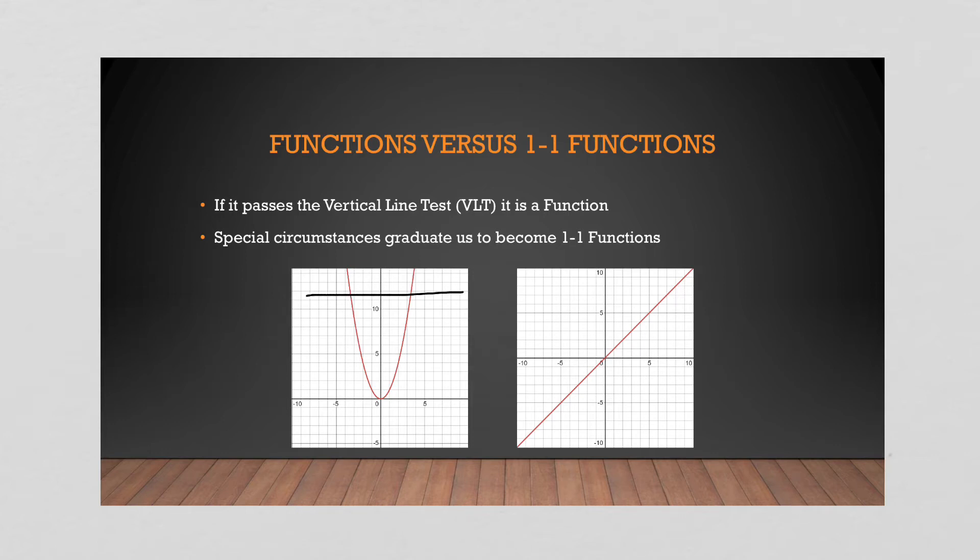Once you've passed the vertical line test, you then check the next test, which is the horizontal line test. So you draw a horizontal line. And here you can see, nope, it crosses twice. Doesn't matter where you cross this graph, you're going across it twice. Does not pass, right? Channel inner Gandalf. It does not pass. So this is still just a function.